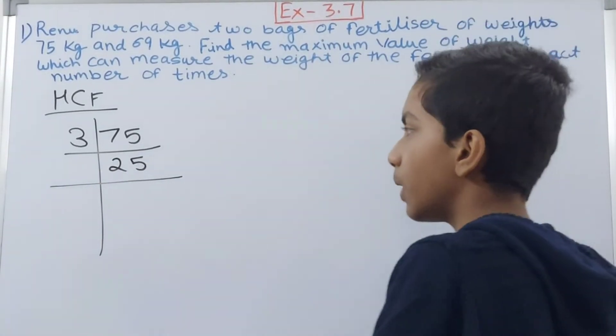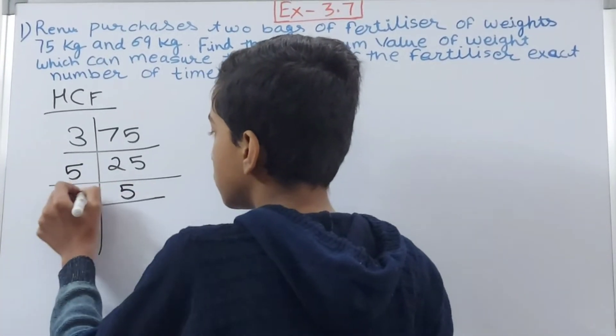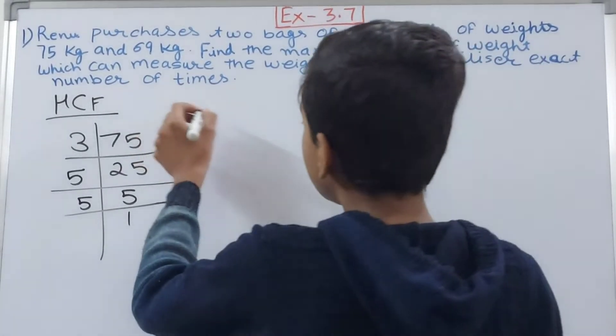Again 25 will not go by 2, not by 3. So it will go by 5. 5 times 5. 5 will also go by 5, then 1.